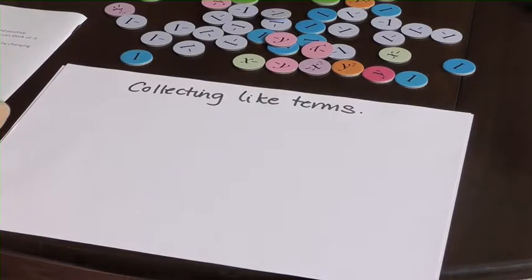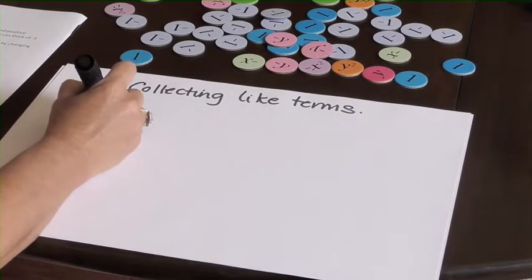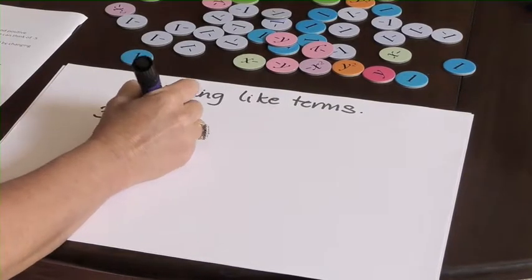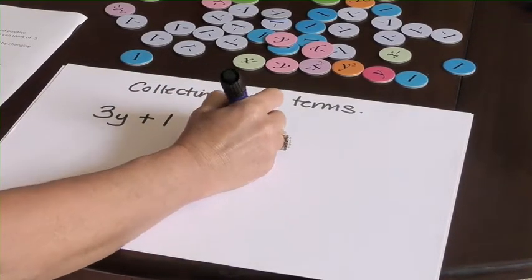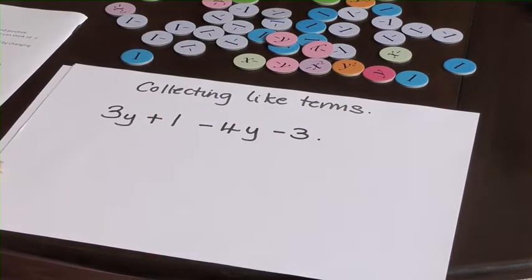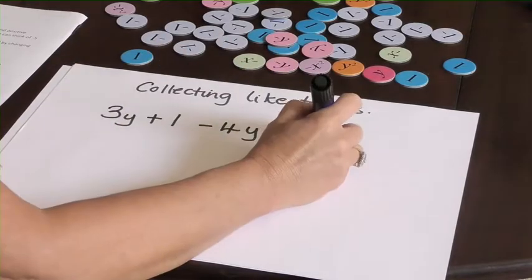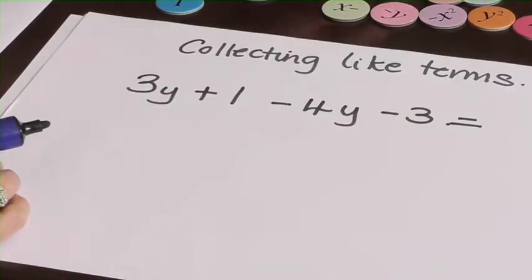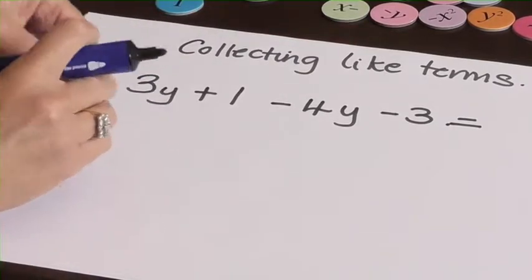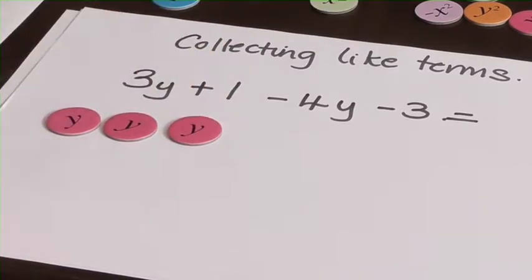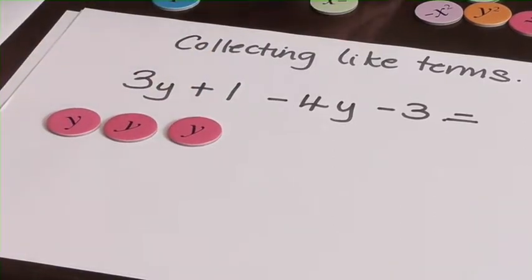So if we have a think about evaluating 3y plus 1 minus 4y minus 3, let's model that expression using the disks. So we'll have 3y's: 1, 2, 3. We'll have a 1.